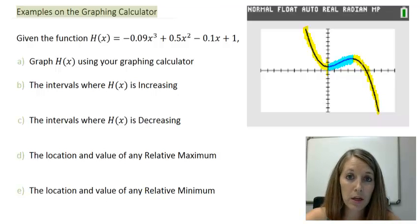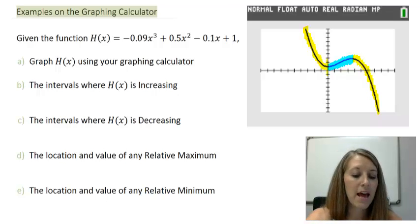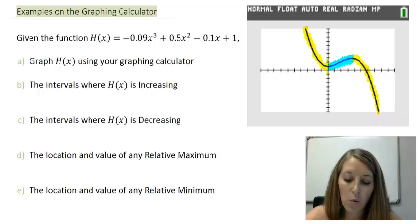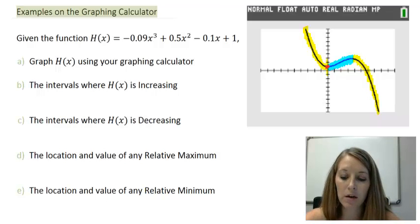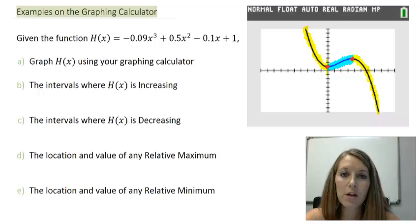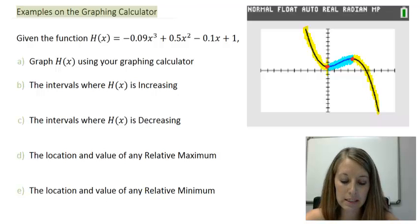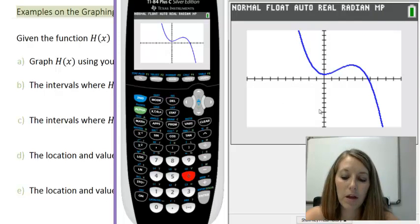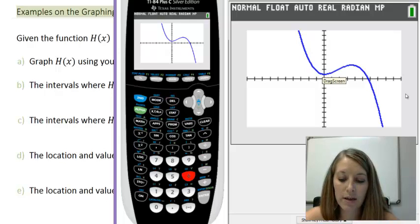Anytime it switches between increasing and decreasing, that gives us our maximums and minimums. So we have a minimum at this point right here, and a maximum at that point right there. We're going to use the calculator to find those maximums and minimums precisely, and then use that to help us with the specified values of increasing and decreasing. There is a minimum value right here.